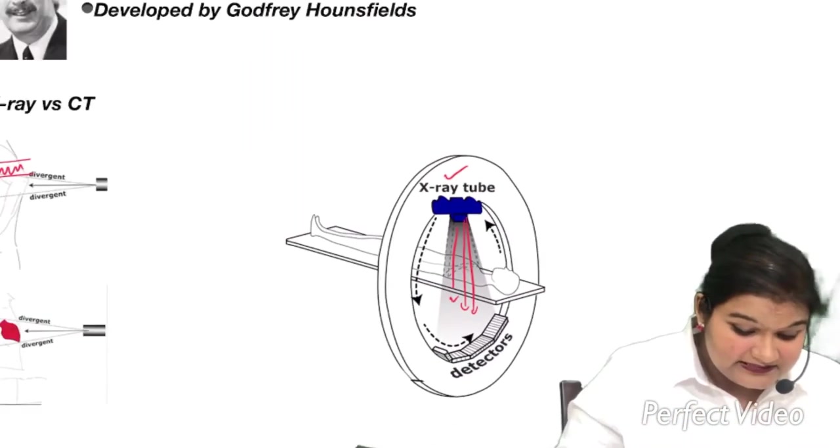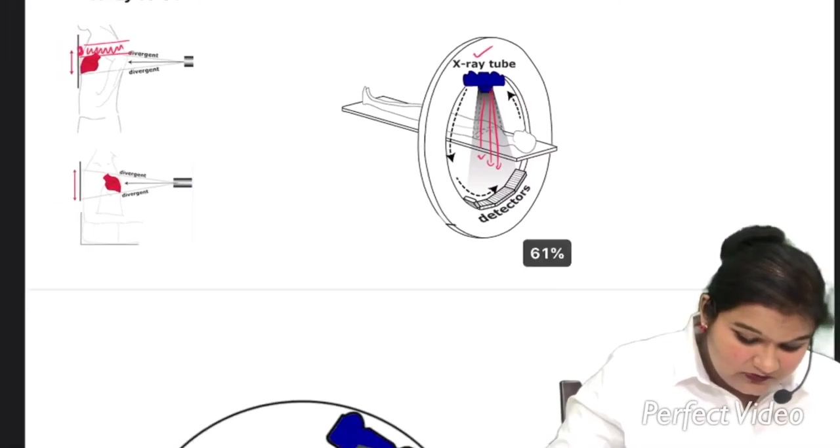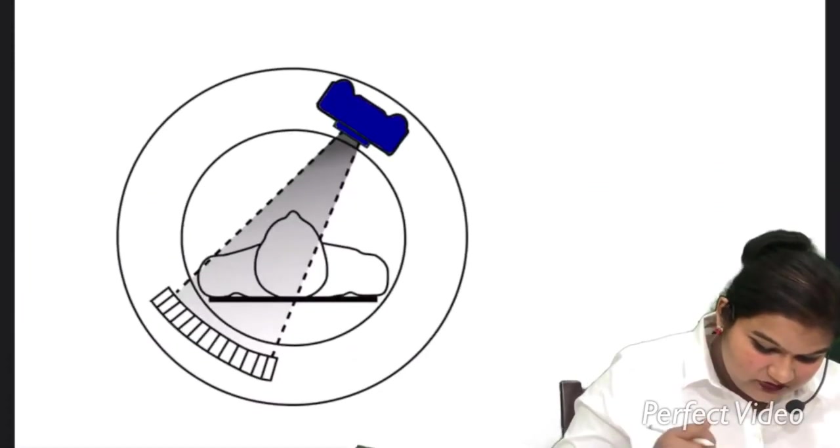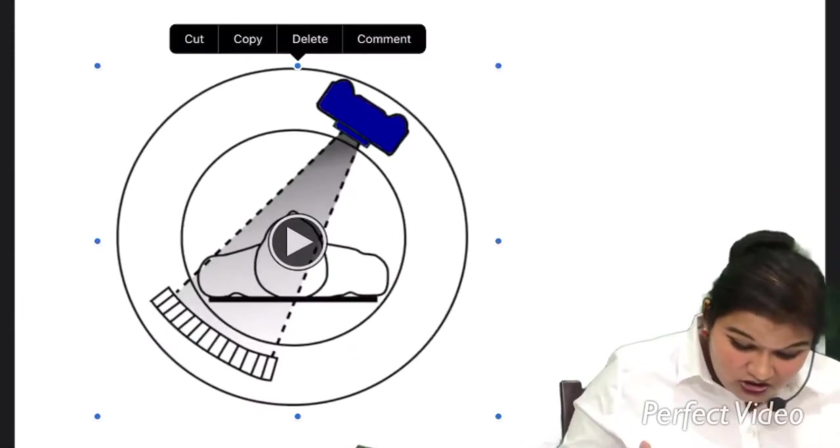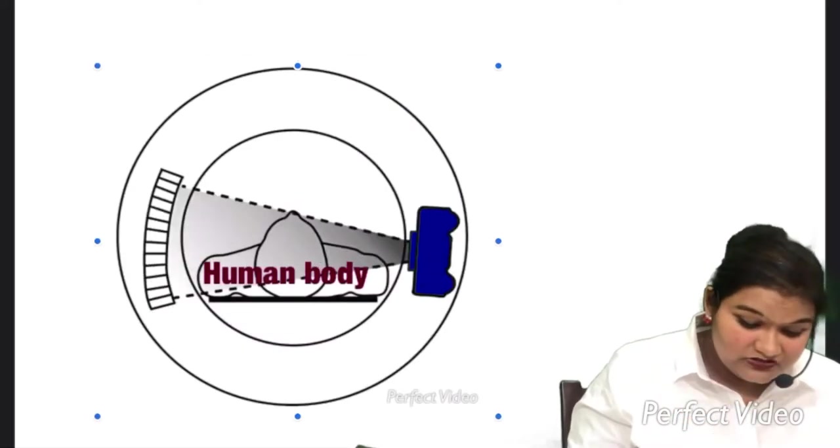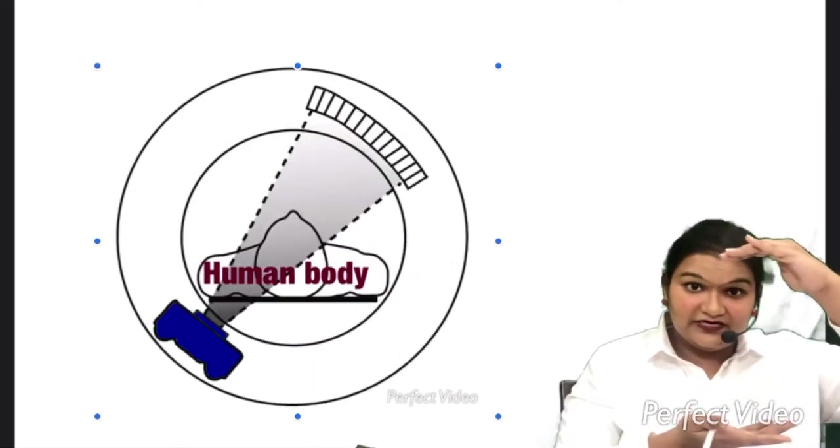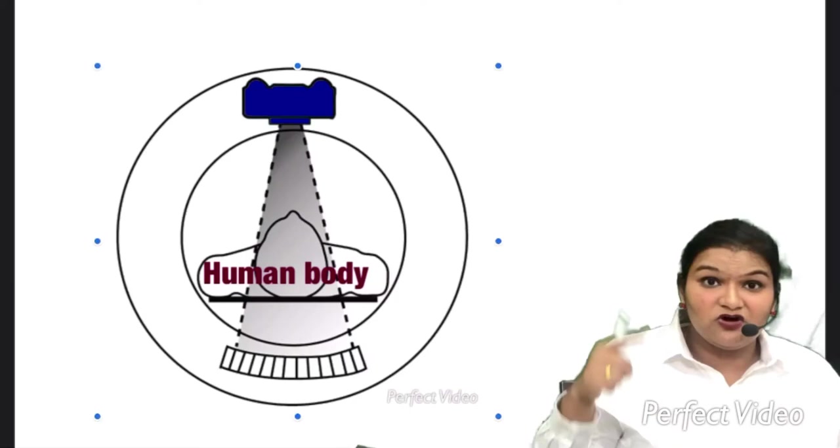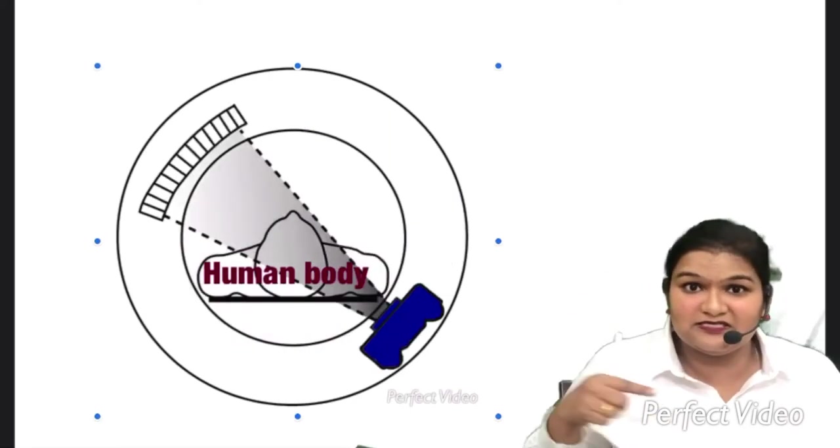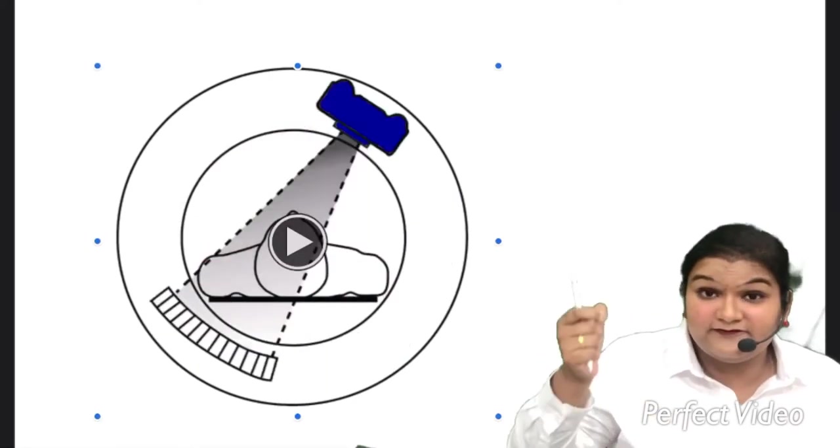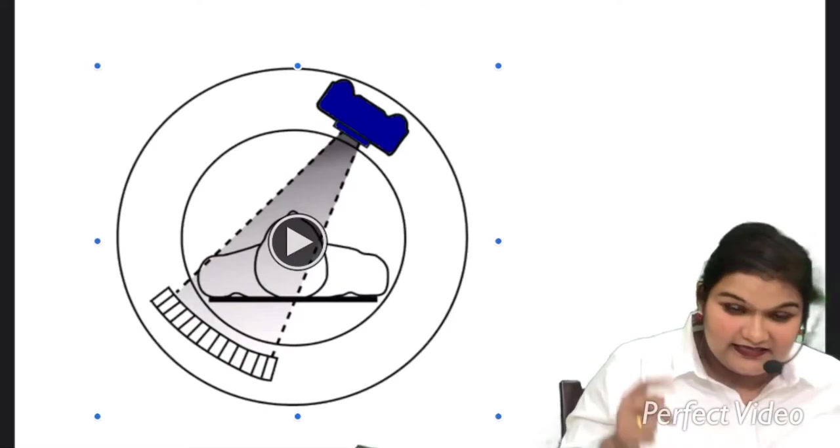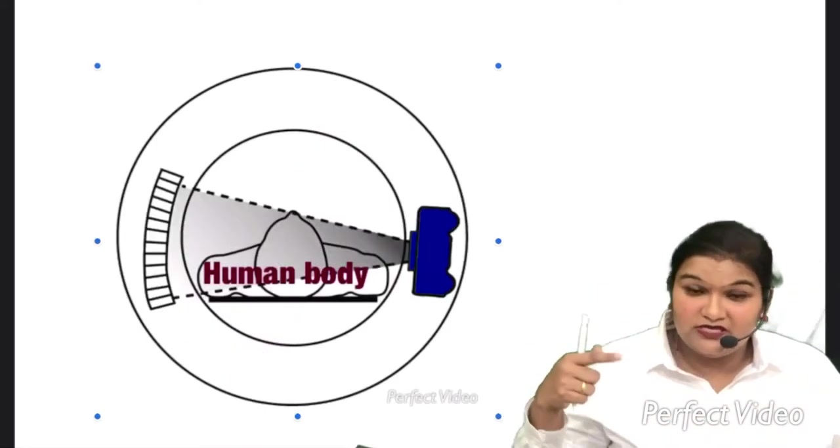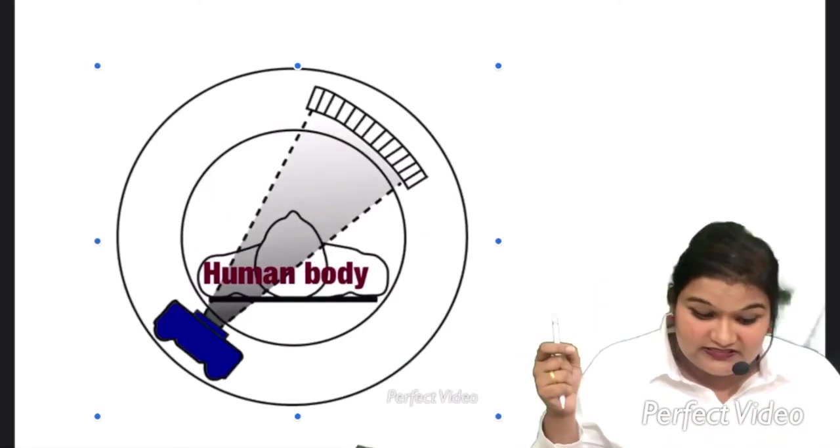So how does basically CT work? You can see that X-ray tube and the detector are moving in circular motion and covering each and every angle in 360 degrees of that specific level. It is moving in circular motion and covering every angle in 360 degrees.